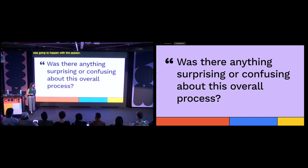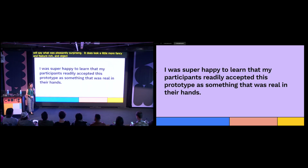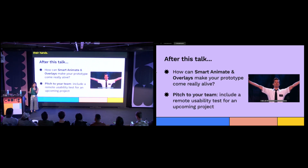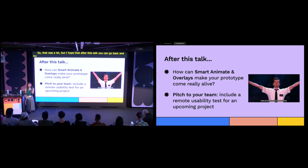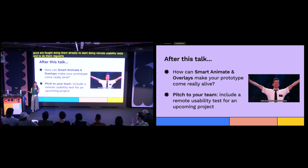At the end of every session, I asked everyone: was there anything surprising or confusing about this overall process? One person said, 'I will say what was pleasantly surprising — it does look a little more fancy and feature rich.' This made me super excited because I didn't need any dev work to make this prototype come really alive, and they took this prototype as something real and believable in their hands. I hope that after this talk you can go back and try to see how SmartAnimate and overlays can help your prototype come really alive, and that you can pitch to your team — if you're not doing them already — to start doing remote usability tests regularly and tell them about the numerous benefits they can provide. Thank you so much.